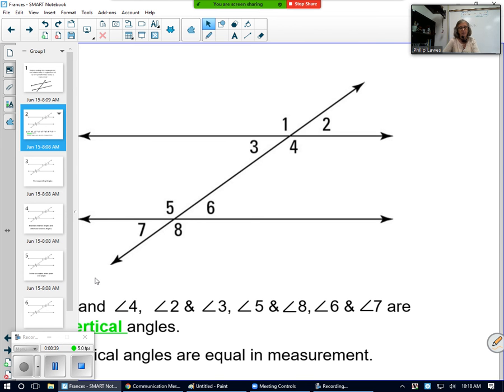So at the bottom of the screen I've already got listed that angle 1 and angle 4, angle 2 and angle 3, angle 5 and angle 8.